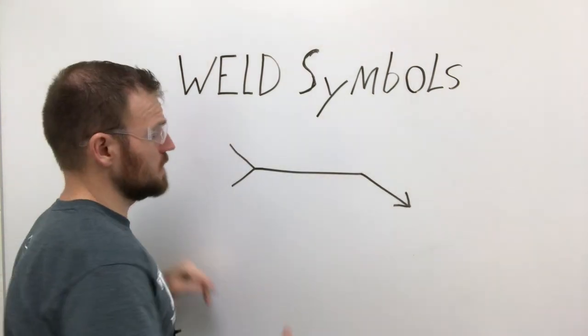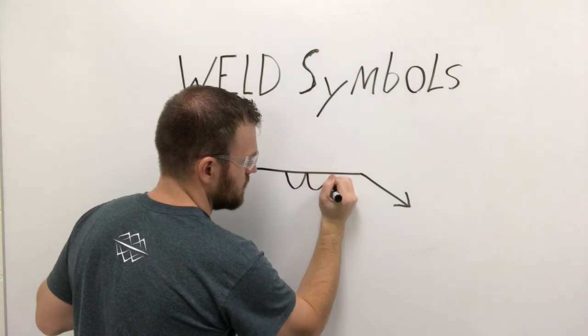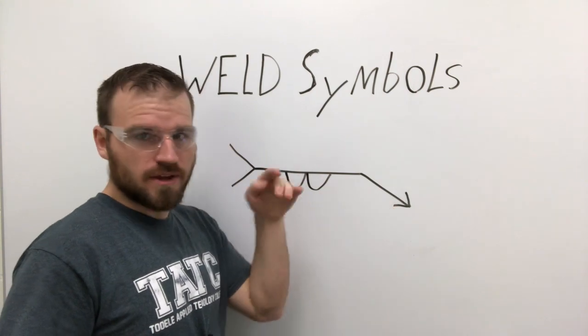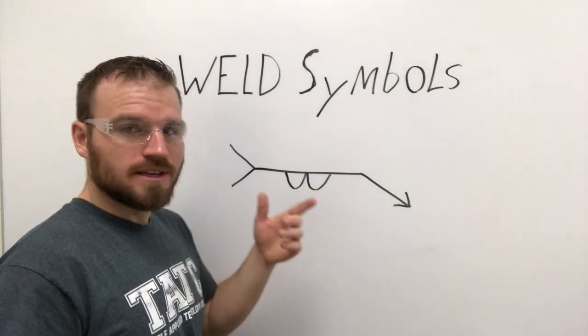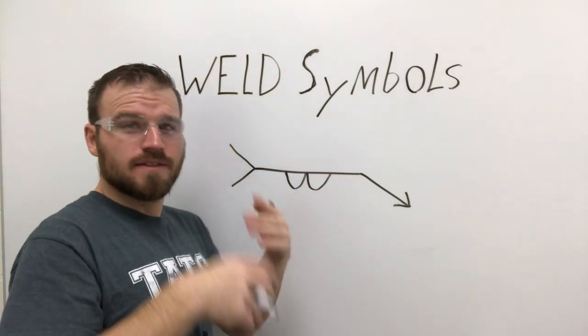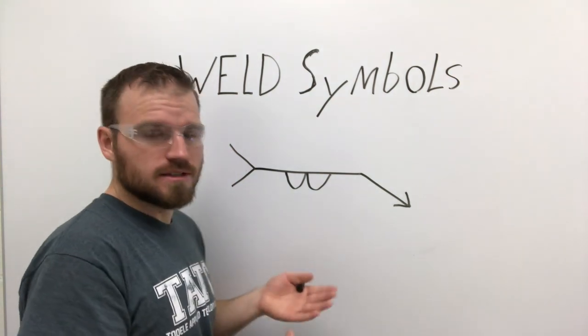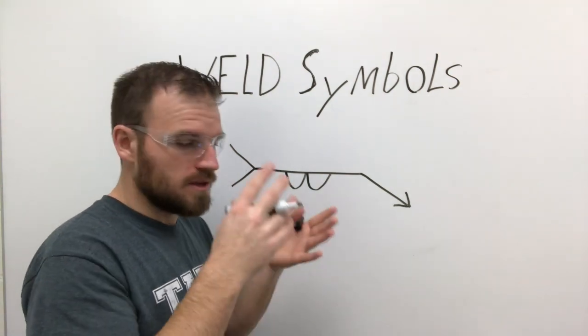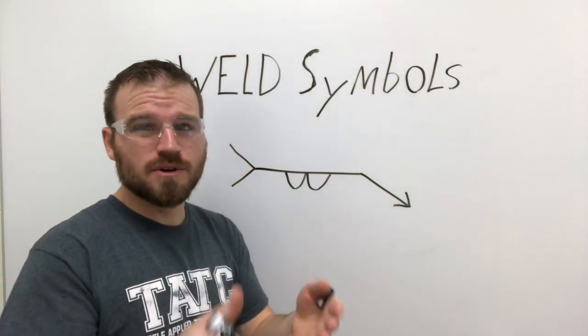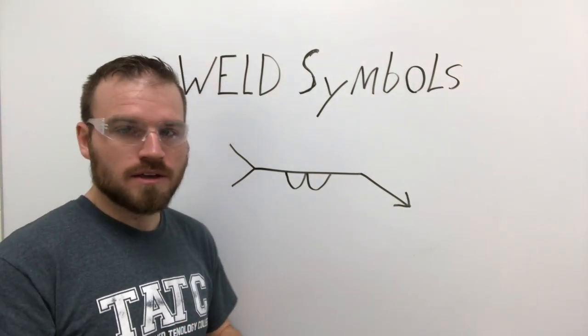So a surface bead will just be these two little bumps like this. Notice that they're on the arrow side. The reason for that is this arrow is going to indicate a plate surface. You actually never see it where there's something on the other side that would indicate they want to put a weld on the back side of the plate you're working on. Now the reason that there's two bumps and not just one is because the same symbol is used for back gouging a weld, so we try to distinguish that by having two separate bumps.